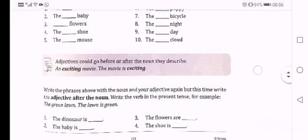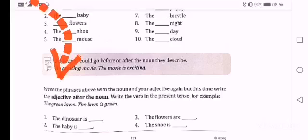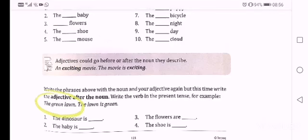So for the following activity, you have to write the phrases above with the noun and your adjective again. But this time, write the adjective after the noun. Write the verb in the present tense. For example, the green lawn becomes the lawn is green.